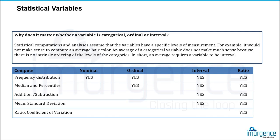Understanding variable types — nominal, ordinal, interval, and ratio — is important because the type of variable determines which statistical computations are valid. For a nominal variable, you can compute frequency distributions. For ordinal, you can also compute median and percentile. For interval, you can add frequency, median, percentile, mean, and standard deviation. For ratio, you can additionally compute the coefficient of variation. This is why identifying variable type is critical for analysis.